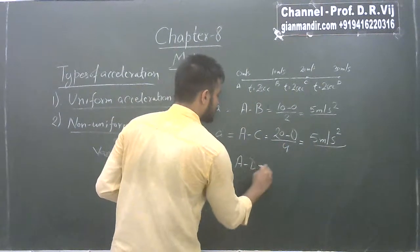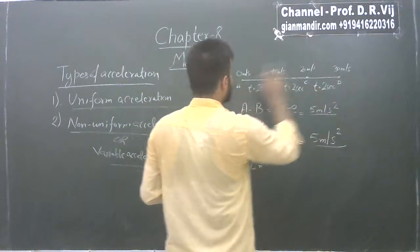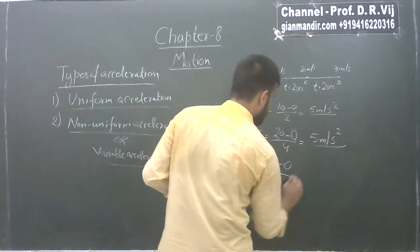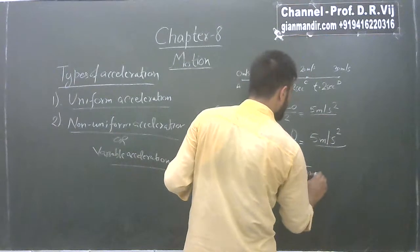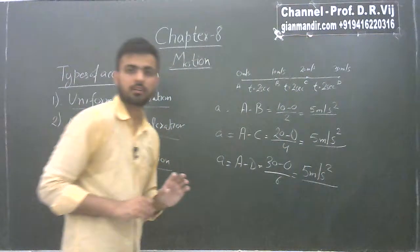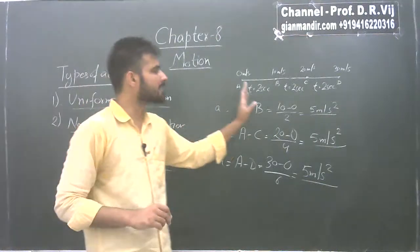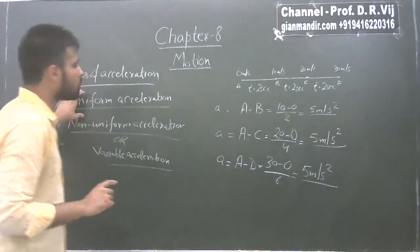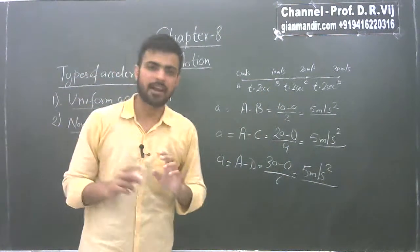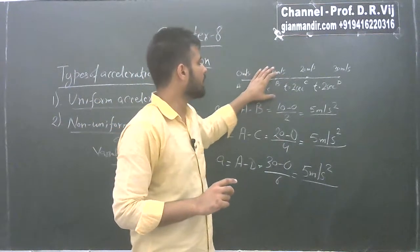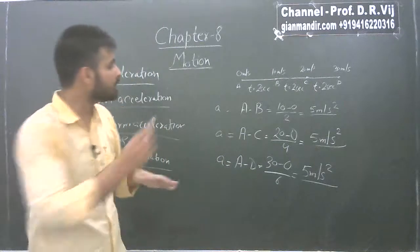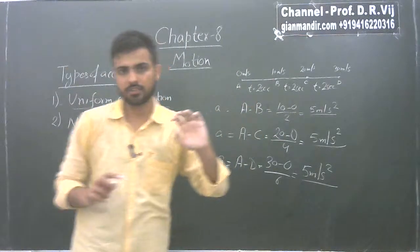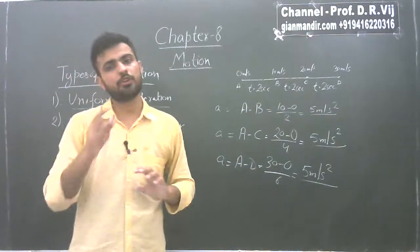From A to D, the acceleration is also the same — 5 m/s². As the acceleration at any point is the same, the body is said to be in uniform acceleration. Uniform acceleration is defined as: if a body has equal acceleration at equal intervals of time, the body is said to be in uniform acceleration.